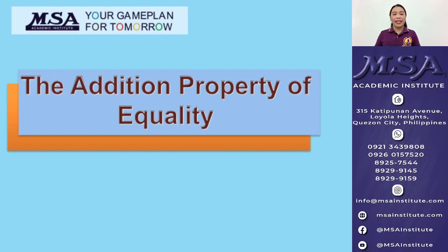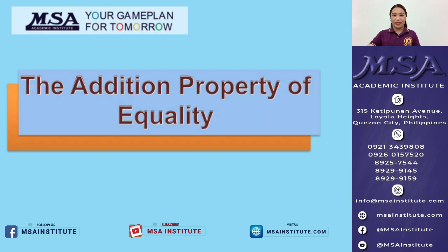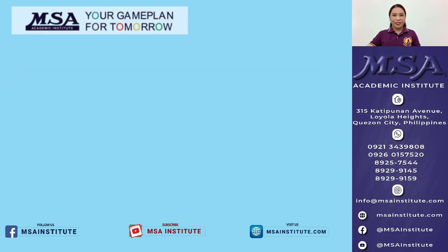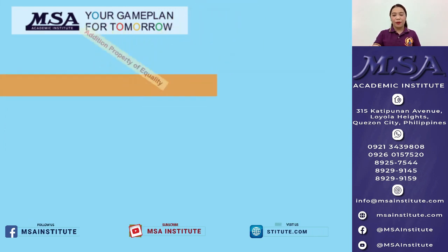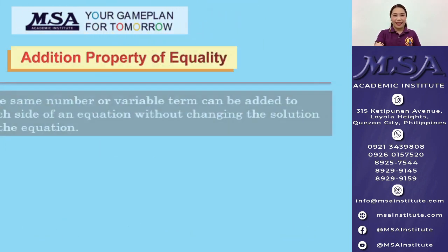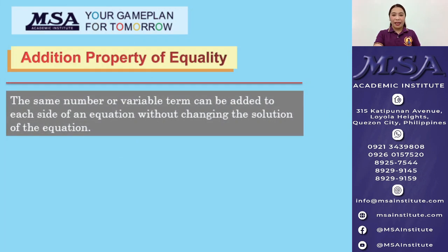Today, we'll learn how to solve equations using the addition property of equality. The addition property of equality states that the same number or variable term can be added to each side of an equation without changing the solution of the equation.